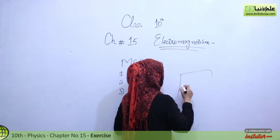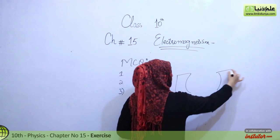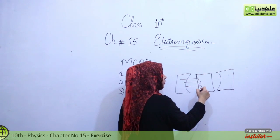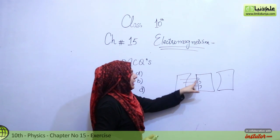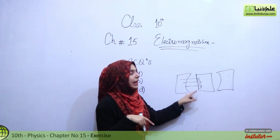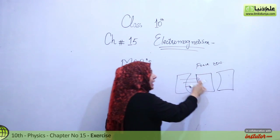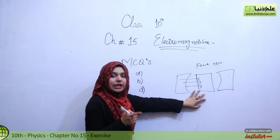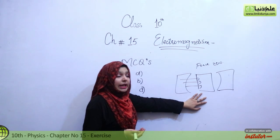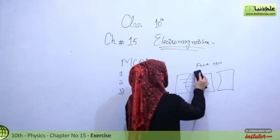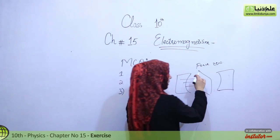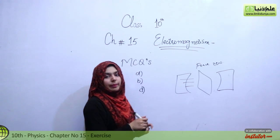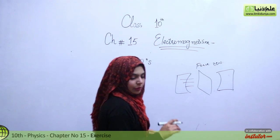When the current-carrying wire is placed perpendicular to the magnetic field, we need to consider the orientation. When the wire is perpendicular to the field, there is no variation in the magnetic field lines cutting through the wire, so no additional force is generated in that sense. In this configuration the force will be zero. So number D is the right option.